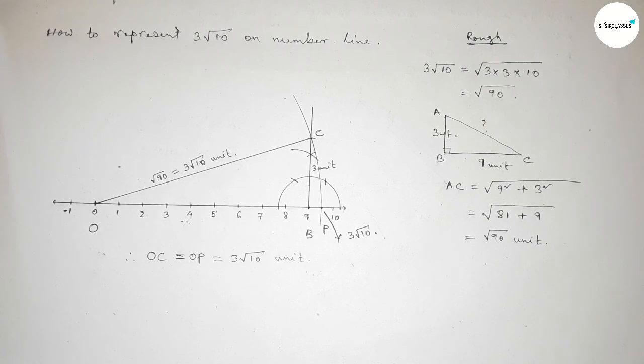So therefore distance OC and OP are equal, so equal to 3 root 10 unit. So that's all, thanks for watching. If this video is helpful to you, then please share it with your friends.